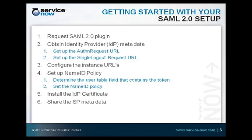In conclusion, the main steps for setting up SAML 2.0 within your instance to work with an IDP are: first, request the SAML 2 plugin; second, get the IDP metadata and grab your AuthN request URL and single logout request URL using the HTTP redirect binding; third, configure the instance URLs in your properties; fourth, set up the name ID policy to match your IDP and ensure the user table field matches the token sent in the SAML response; fifth, install the IDP certificate to verify signatures; and finally, generate the metadata on your ServiceNow instance and send it to your IDP. Then you should be up and running. Thank you for joining me in this demo for setting up ServiceNow to talk to an IDP using the SAML 2.0 plugin.